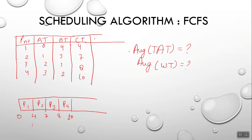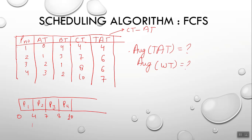With the completion time, you can calculate the turnaround time. Turnaround time equals completion time minus arrival time. So: P1 = 4 − 0 = 4, P2 = 7 − 1 = 6, P3 = 8 − 2 = 6, and P4 = 10 − 3 = 7.